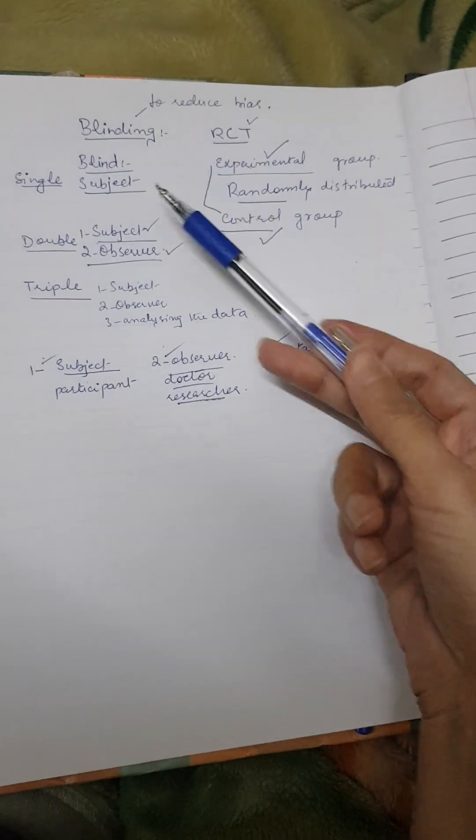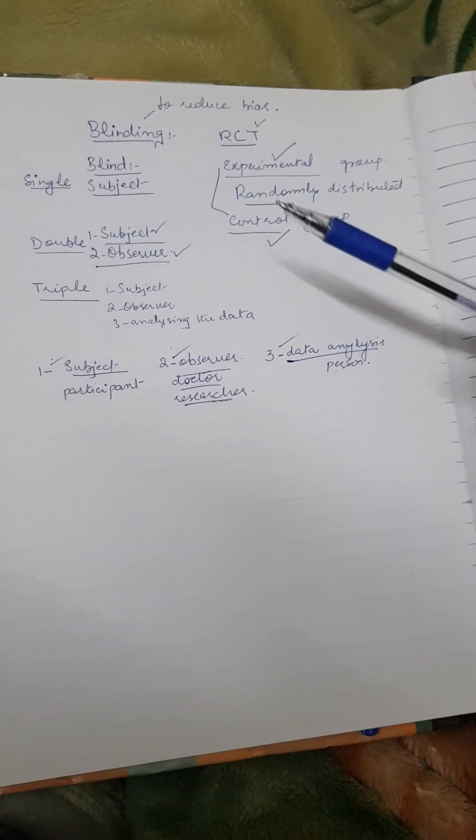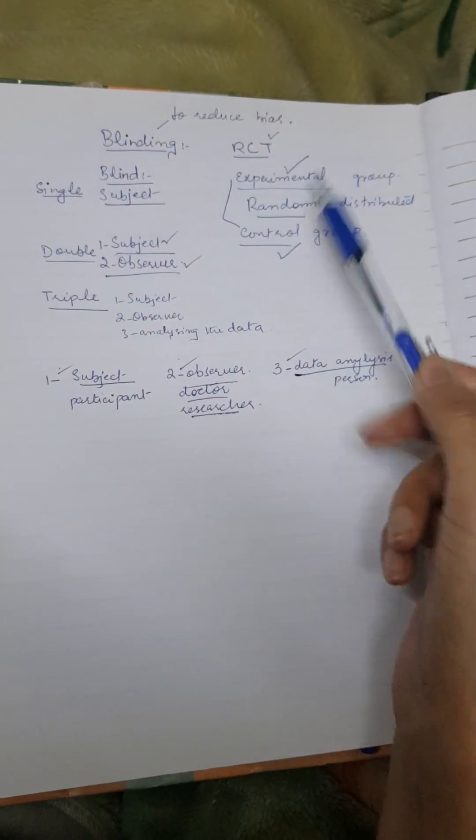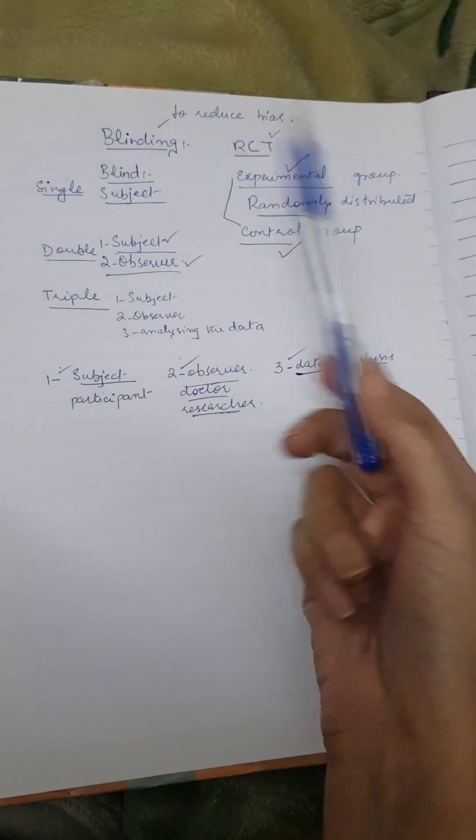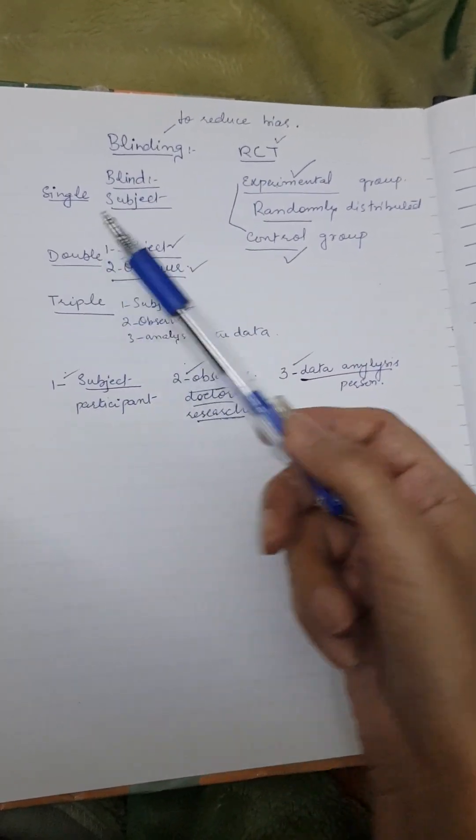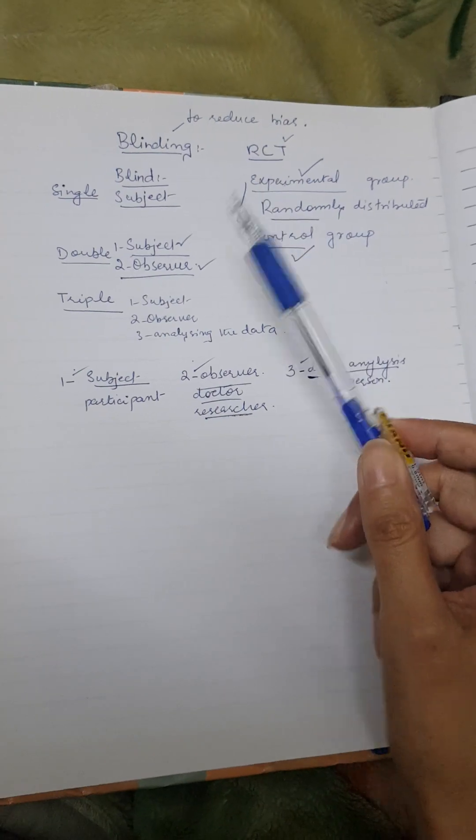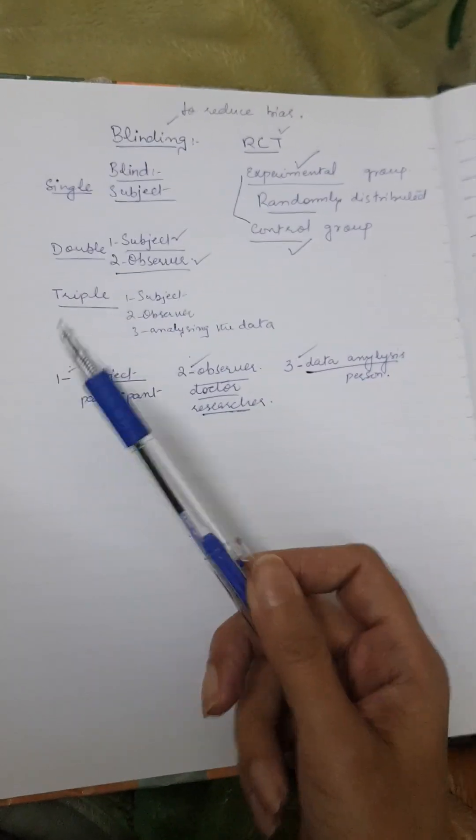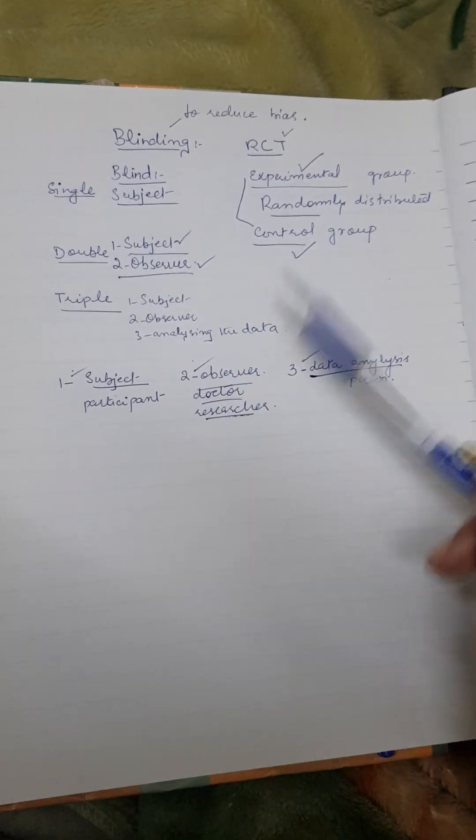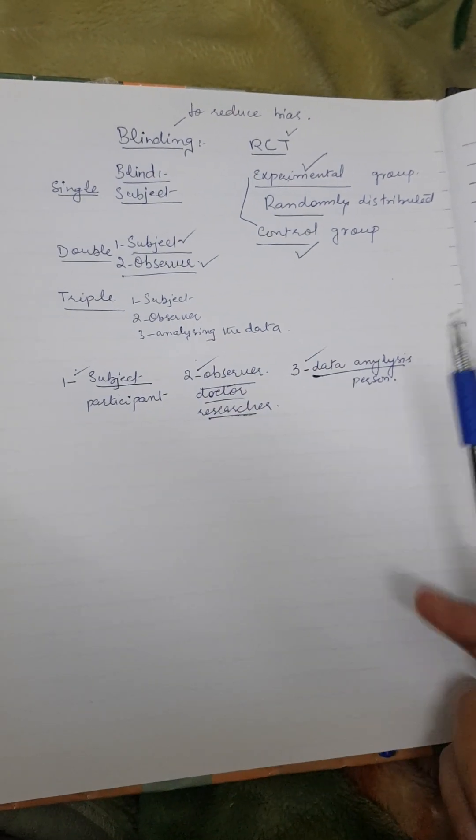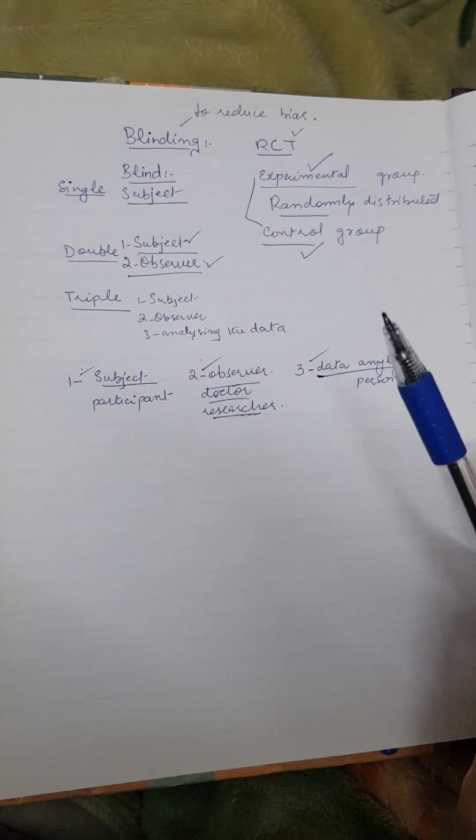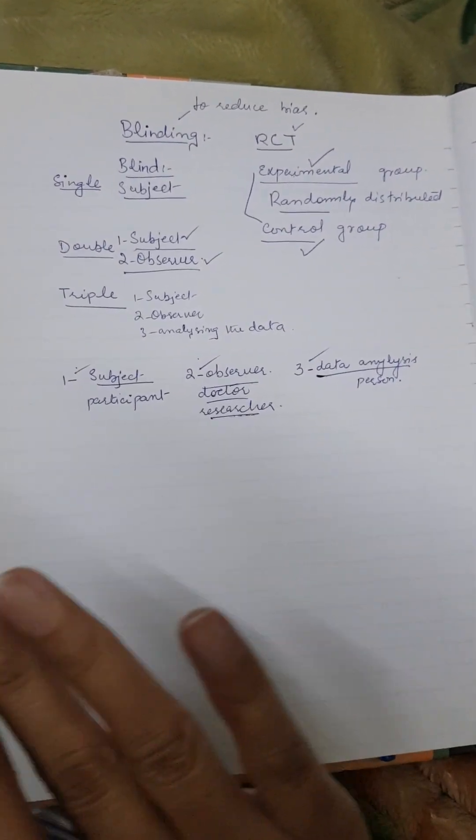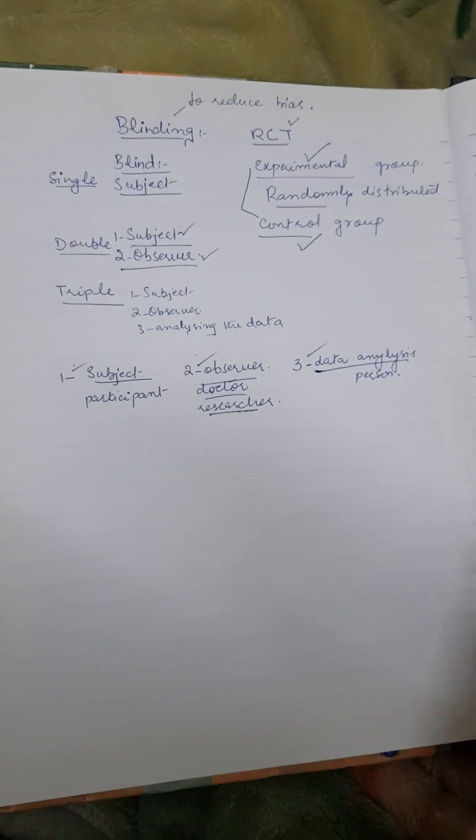So this is the most simple description of blinding in a clinical trial, that is the RCT. Single blind: subject doesn't know whether I'm in experimental group or control group and what I'm receiving. Double blind: subject doesn't know, doctor doesn't know what treatment is being given, who is in experimental group, who is in control group. And then the triple blind where subject, observer, and at the end whoever is analyzing the data, no one knows what is happening where. That is the triple blind.